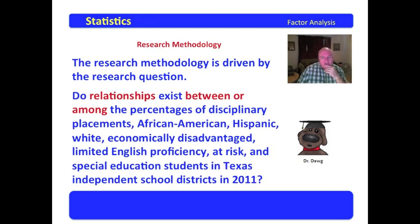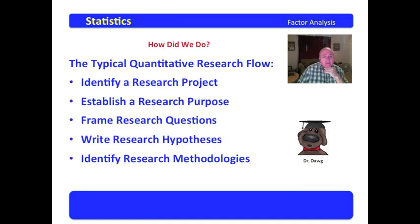The research methodology is driven by the research question. I look at that question and we talk about relationships — at least we know that this is correlational. We could do a correlational matrix on these variables, or with this question, we could choose to answer it with a factor analysis. The typical research flow, again, identifies the project, the purpose, frames the questions, you write the hypotheses, and you identify your research and methodologies. How did we do in presenting this to you for factor analysis? I hope you gain something from it.